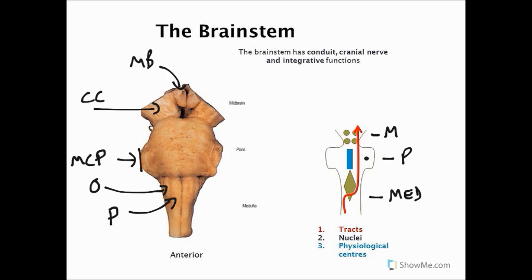The way I like to think about functions of the brainstem is to break them down into three key major roles. And these are the things you should look for when considering whether a stroke, for example, has affected the brainstem.